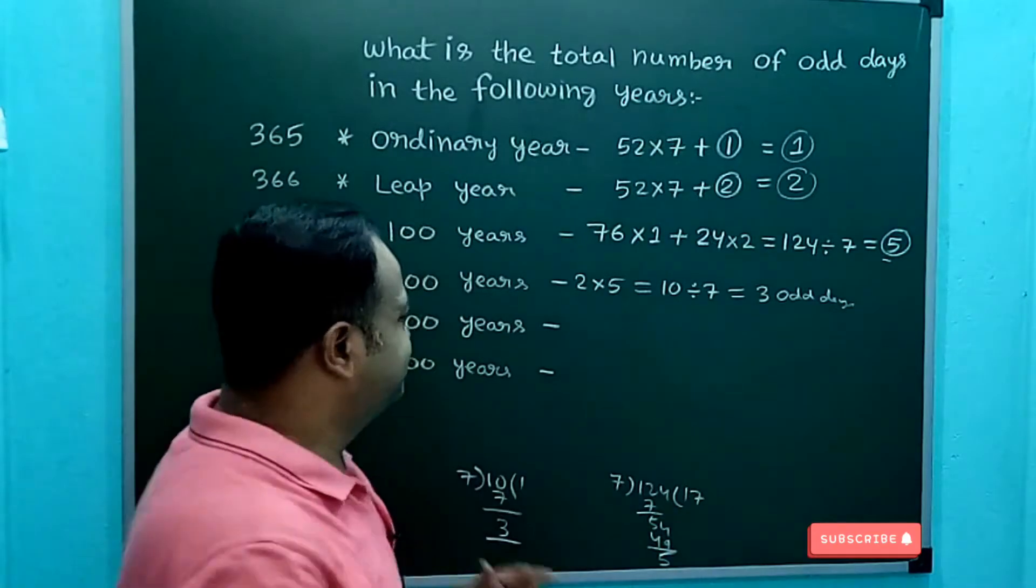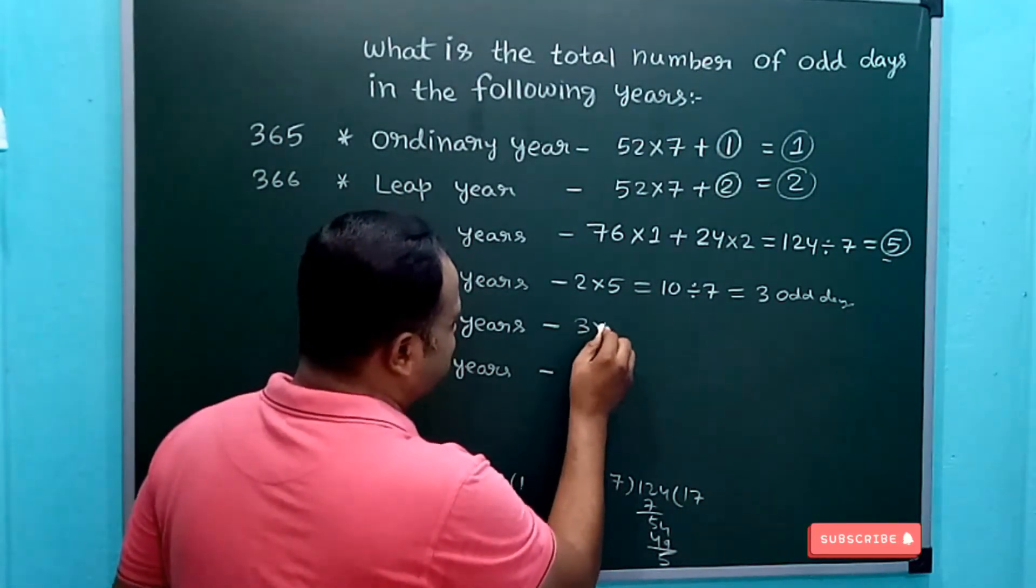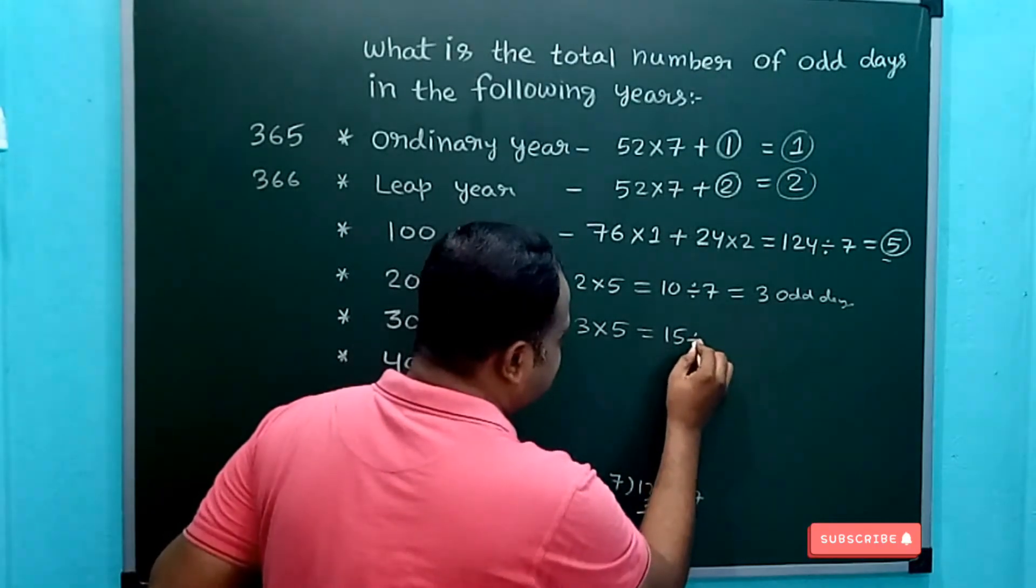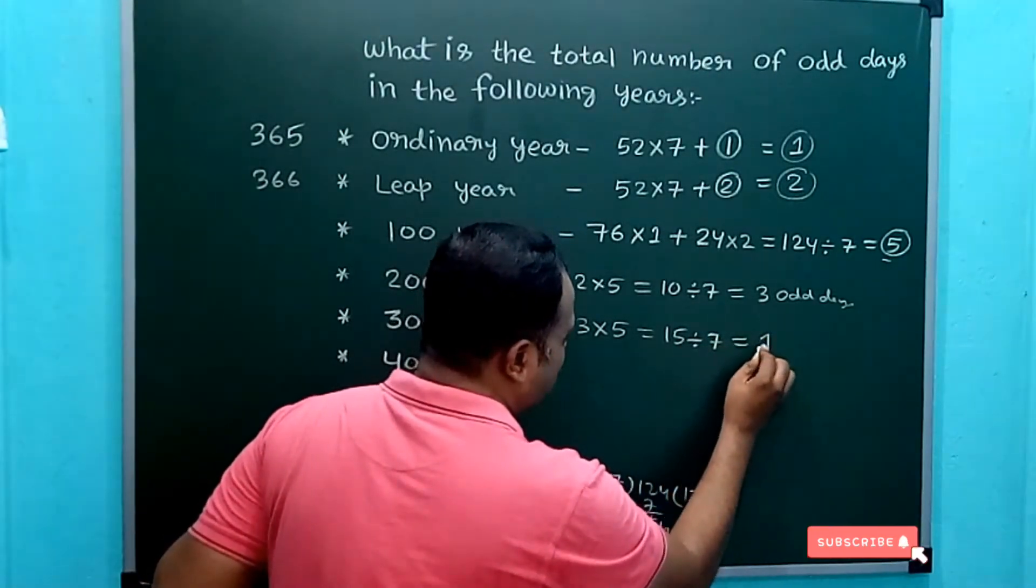Now in case of 300 years, it will be 3 × 5, that is 15. When 15 is divided by 7, the remainder is 1. So 1 odd day.